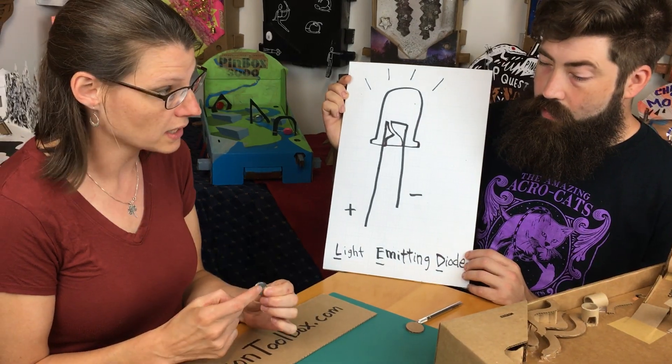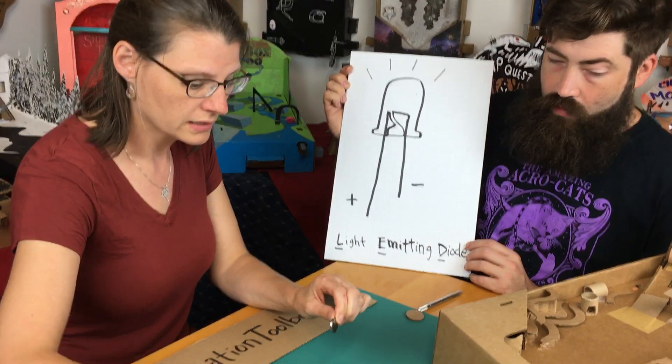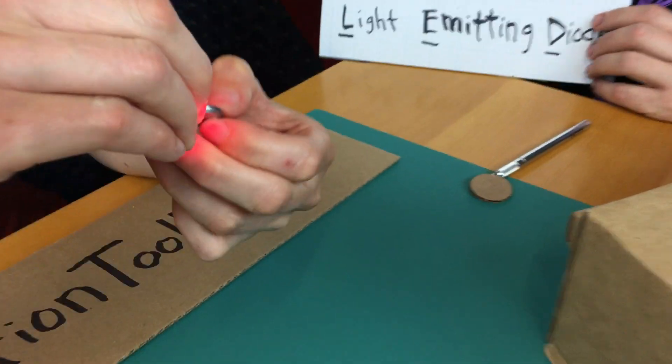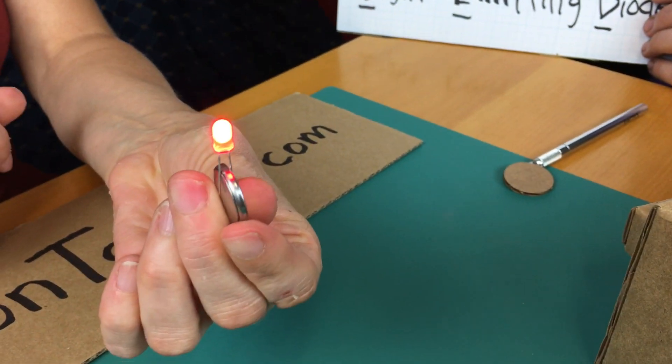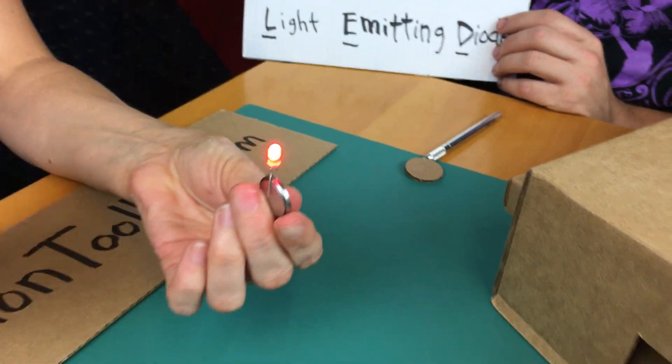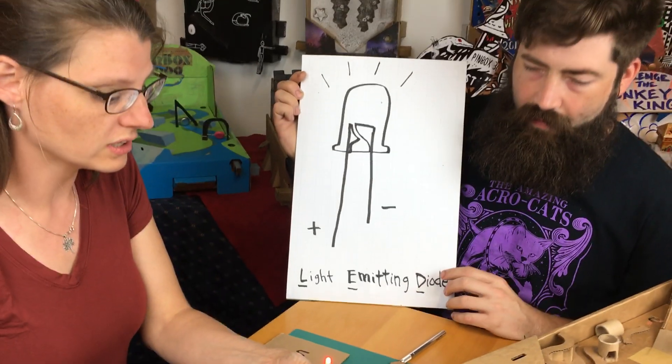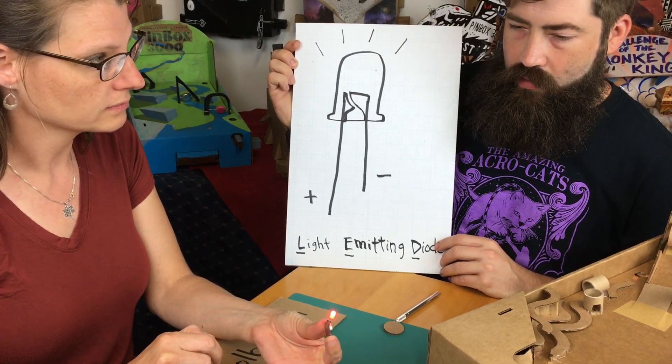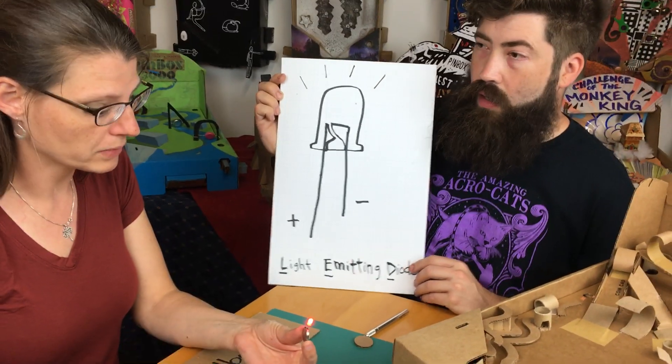Just like a battery has a positive and a negative, our LEDs do as well. If we take our positive and negative and fit it onto our battery, we create a circuit. A circuit is like a circle or a path for the electricity to follow. That's what we're going to create on our pinbox using copper tape.